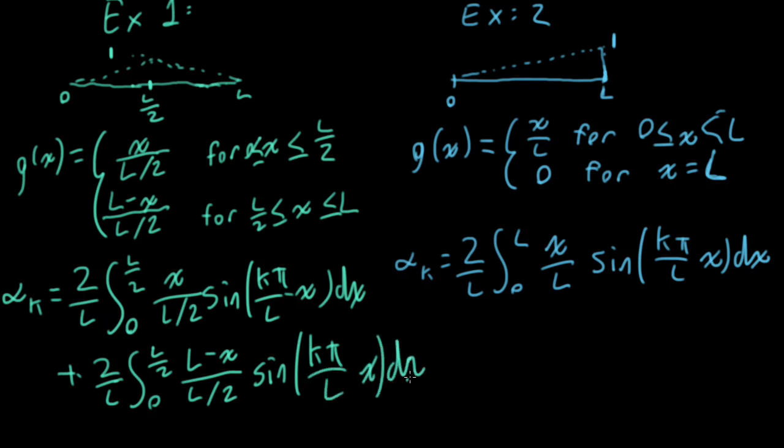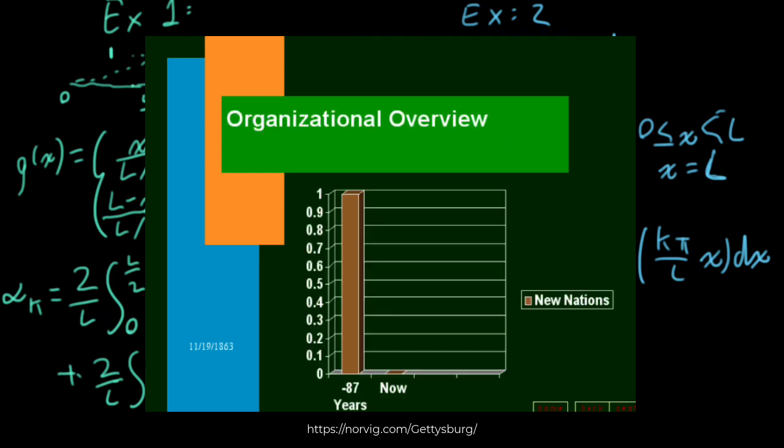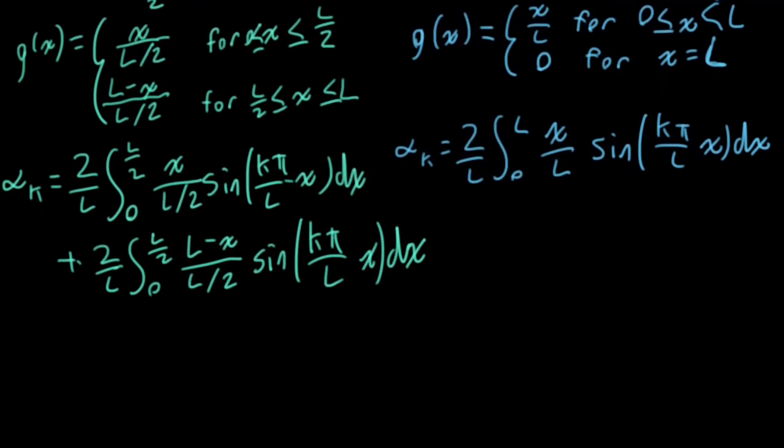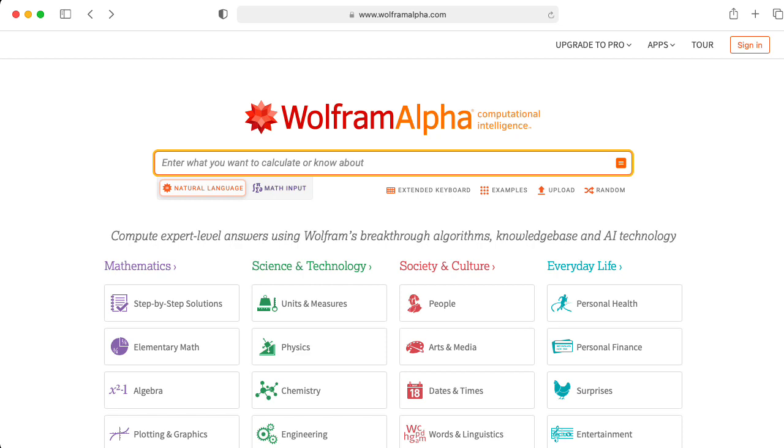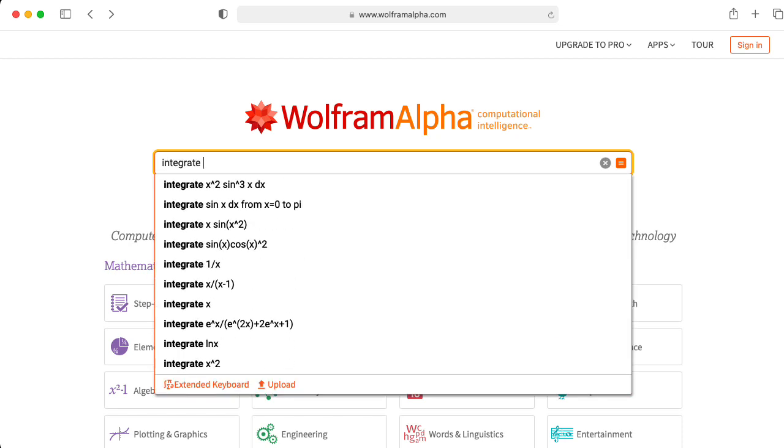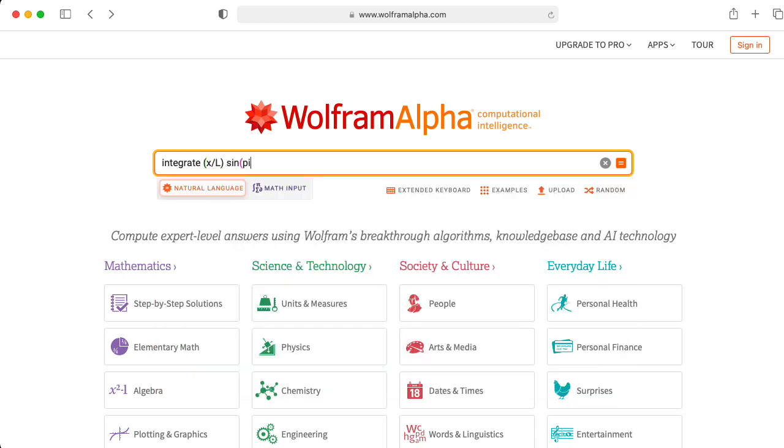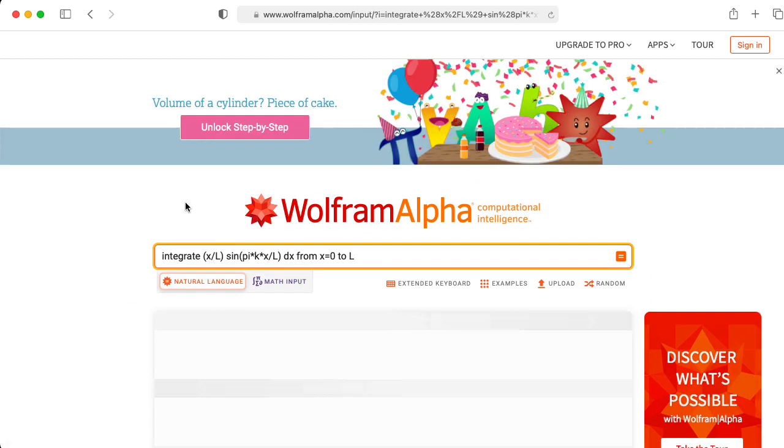My handwriting is really terrible. It's times like this, I think I really should be using PowerPoint, but PowerPoint isn't as much fun. All right, so let me do the example on the right first, because the integral is the easiest. So I'll write 2 over l times the integral. And how should we do this integral? Well, we could integrate by parts, or we could just go ask Wolfram Alpha. Oh, great and mighty Wolfram Alpha, we seek thy great wisdom to integrate x over l times sine pi times k times x divided by l dx from x going from 0 to l. Let's see what it says.